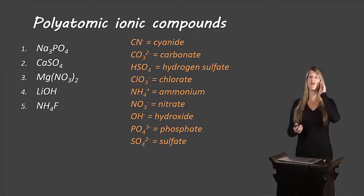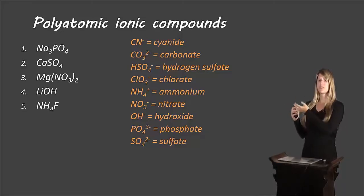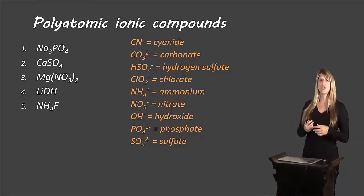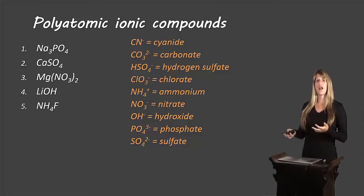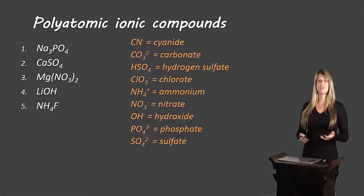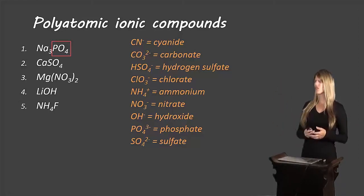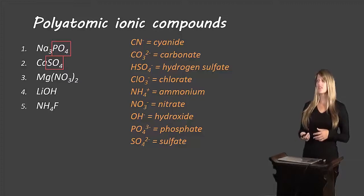Here are some examples of polyatomic compounds on the left, and on the right in orange are some polyatomic ions. These polyatomic ions come together with another element — either a standard ion or another polyatomic ion — to form a compound. The first one: PO4 is the polyatomic piece, called phosphate. The second one: SO4 is called sulfate. The third one: NO3 is called nitrate. And the fourth one: OH is called hydroxide.